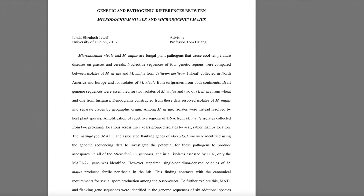Dendrograms constructed from these data resolved isolates of M. majus into separate clades by geographic origin. Among M. nivale, isolates were instead resolved by host plant species. Amplification of repetitive regions of DNA from M. nivale isolates collected from two proximate locations across three years grouped isolates by year rather than by location. The mating type MAT1 and associated flanking genes of Microdochium were identified using the genome sequencing data to investigate the potential for these pathogens to produce ascospores.